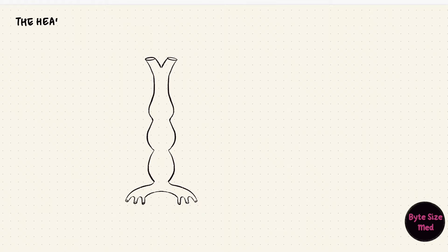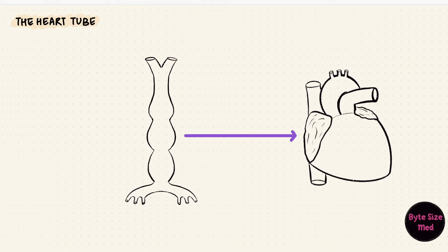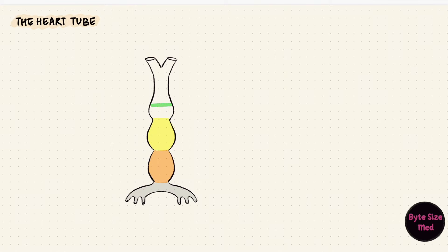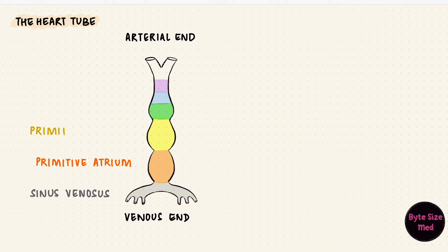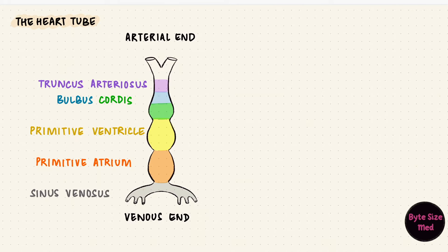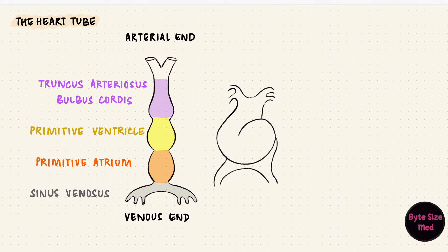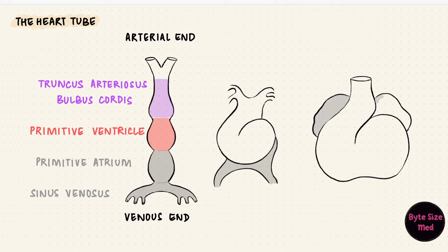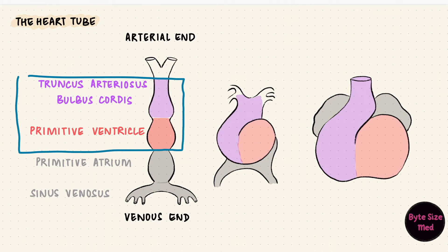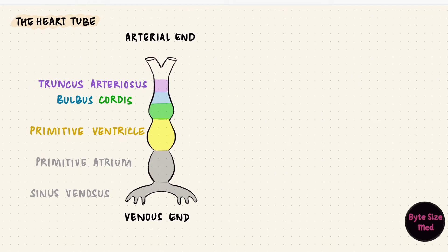Now let's go back to the heart tube — that's what the heart develops from. A quick recap from part one: the heart tube has dilations, it has an arterial end and a venous end. There's the sinus venosus, the primitive atrium, the primitive ventricle, the bulbus cordis, and the truncus arteriosus. The tube bends such that the atria and the sinus venosus move upwards and backwards, and the rest come forwards and downwards. In this video, we're going to be looking at the truncus arteriosus, the bulbus cordis, and the primitive ventricle.